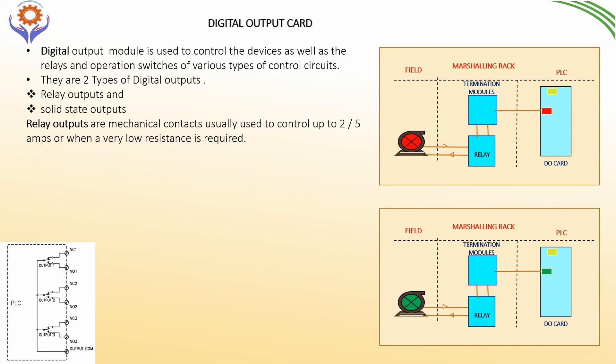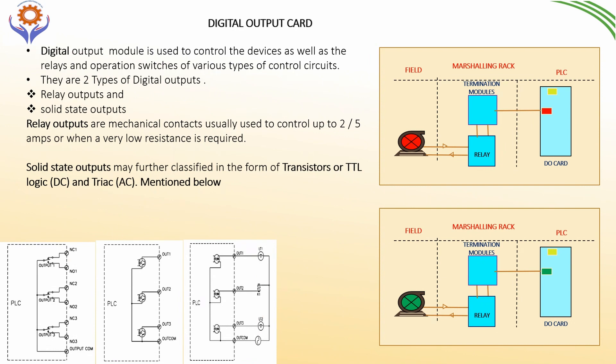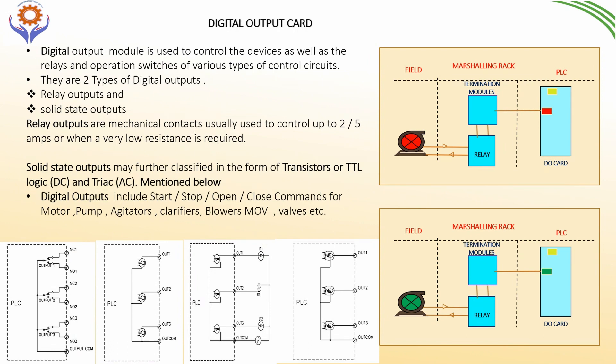Solid state outputs are further classified into four types: transistors, TTL logic, TRIAC, and DC. Some examples of digital output signals are start and stop commands for pumps, motors, agitators, clarifiers, blowers, and also open or close commands for MOVs, valves, etc.